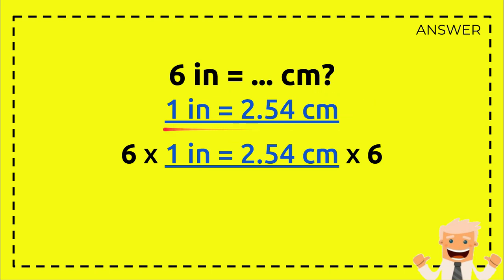1 inch equals 2.54 centimeters. You write that from here to here. This is exactly the same. And then because in the question you have 6 in the left side and you didn't have nothing in the right side, then we will use this 6 and put it in the left side of the equal sign.